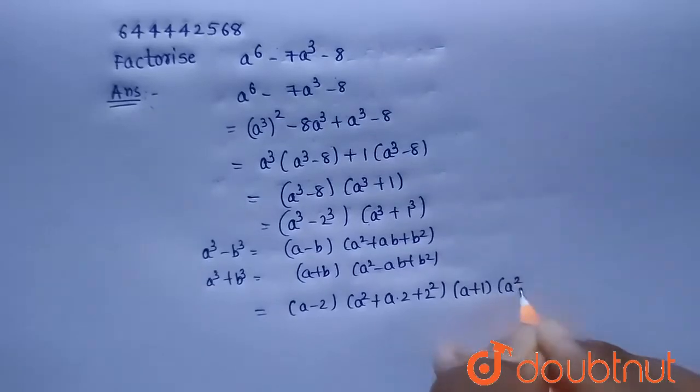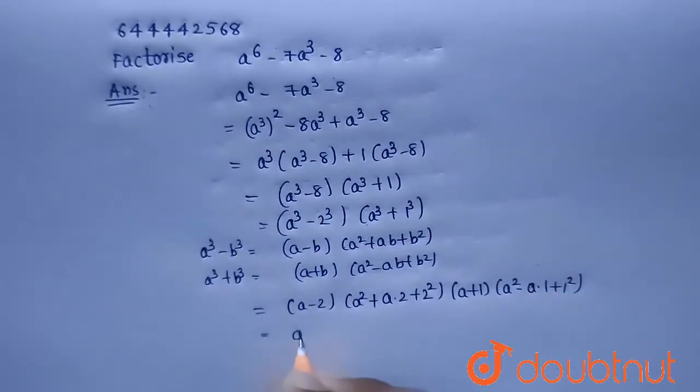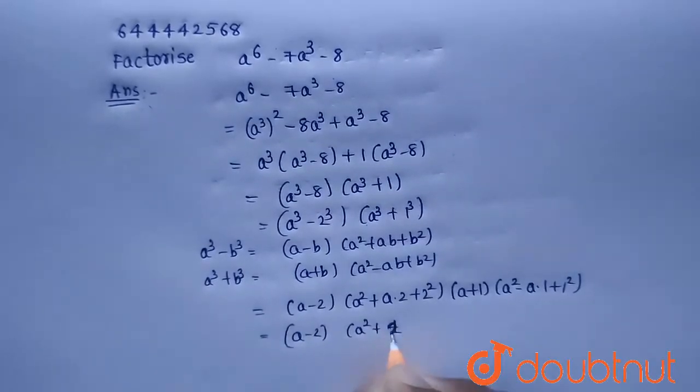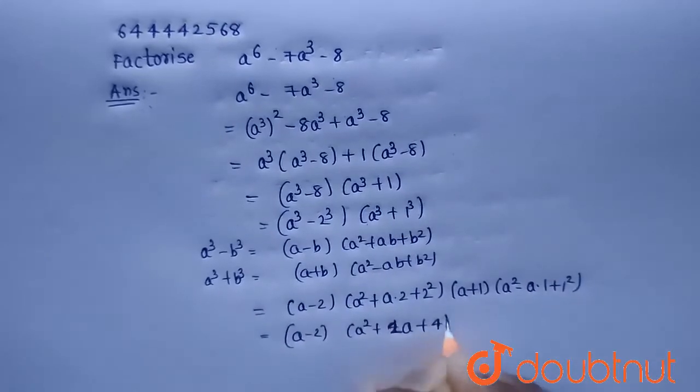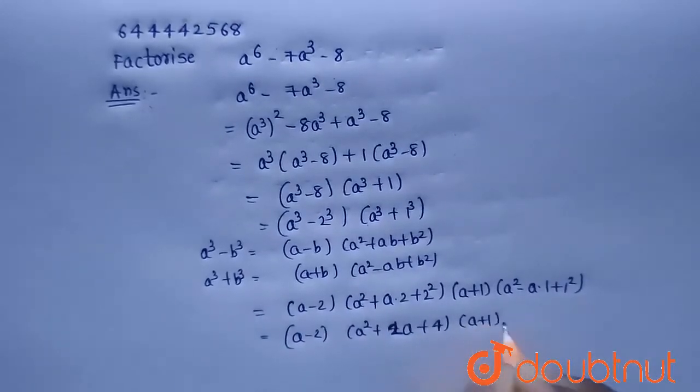And by using the second formula we can write this second term as (a plus 1) into (a^2 minus a plus 1). So that will be equal to (a minus 2)(a^2 plus 2a plus 4) into (a plus 1)(a^2 minus a plus 1).